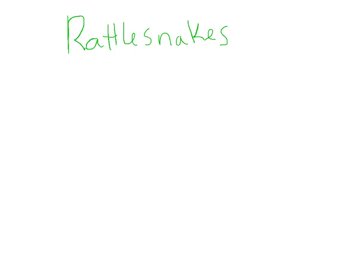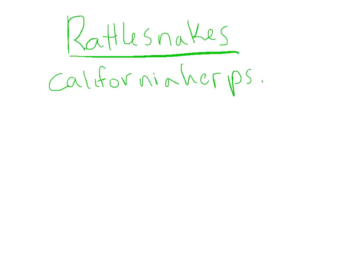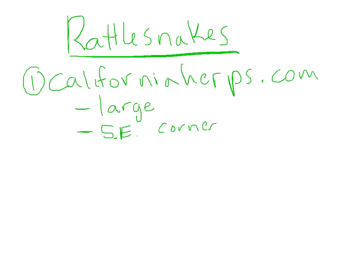It might help if you wrote down what you're taking notes on - write 'rattlesnakes' up at the top. You can use two-column notes. Then write the name of the website - californiaherps.com. I'm not writing super neatly because I'm on an iPad, but I'm taking notes and I don't need to write neatly as long as I can read them. Put a little '1' by it so you remember all the notes for this first part come from californiaherps.com.